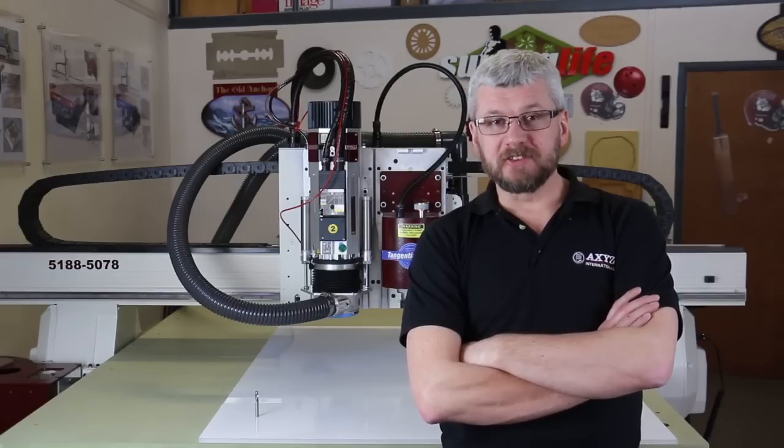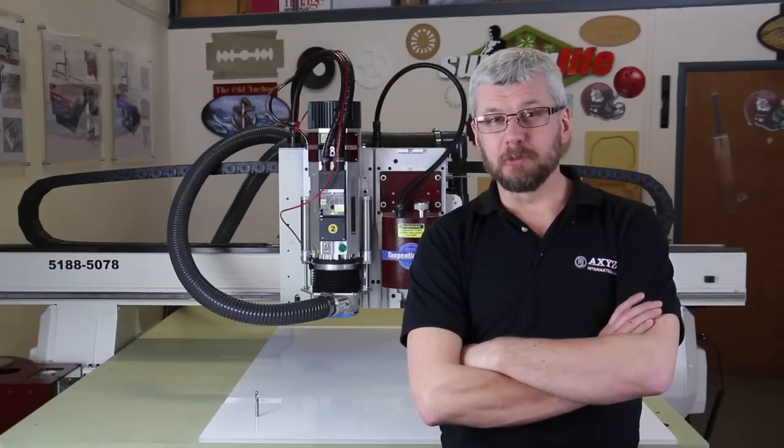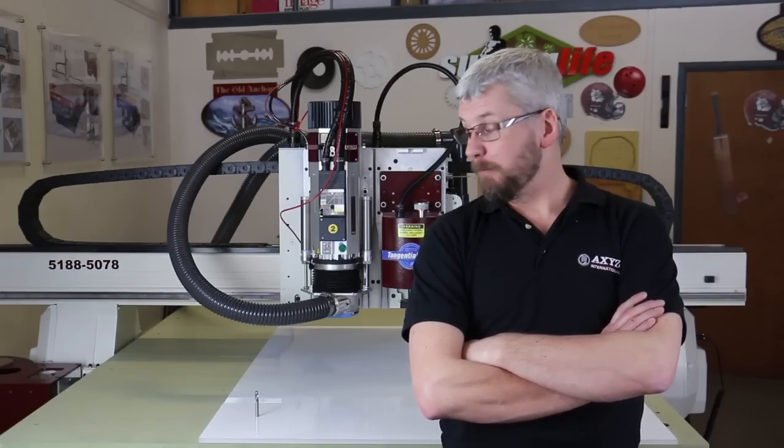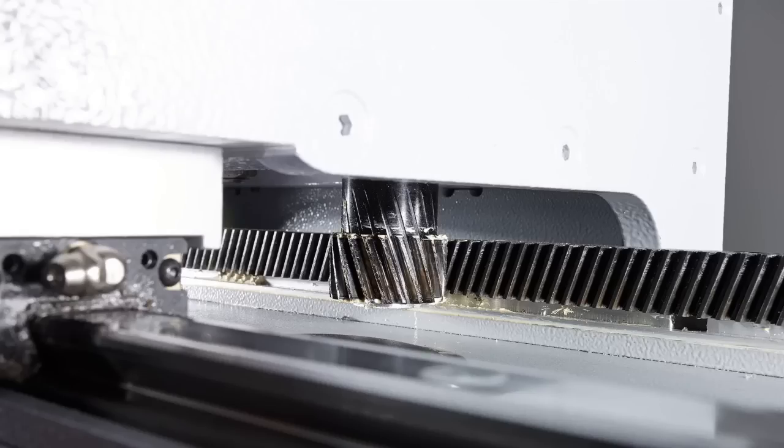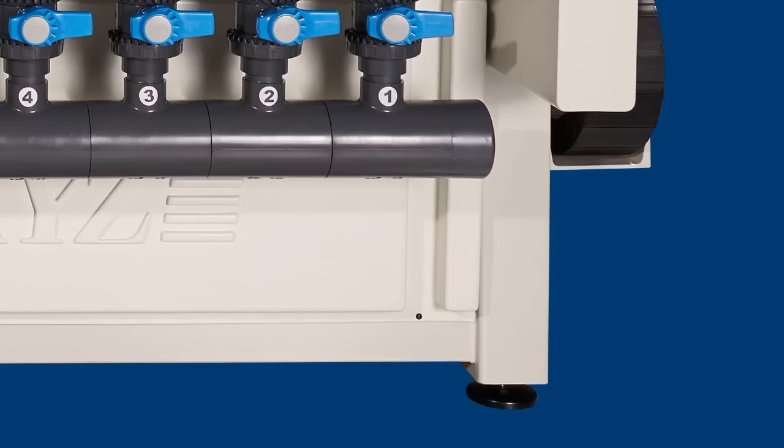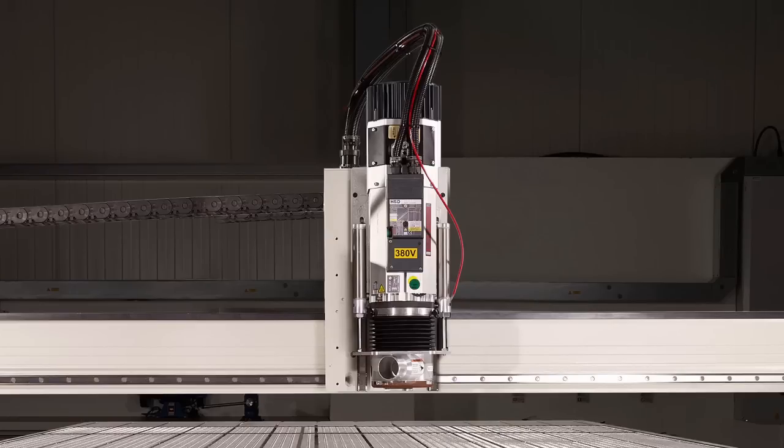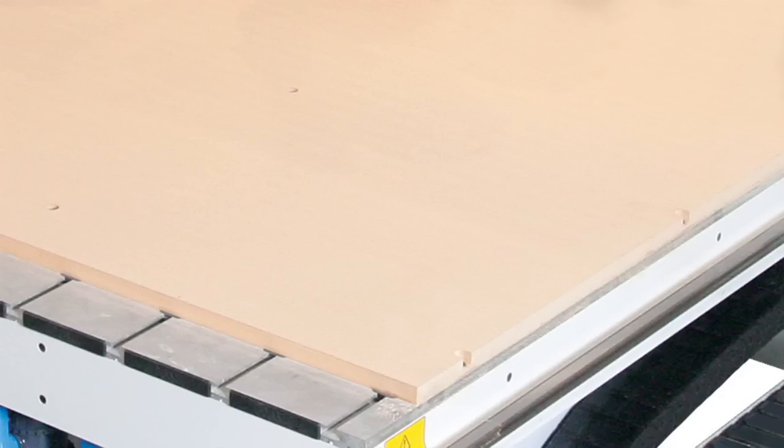Of course, all these factors are irrelevant if you don't have a suitable machine. For example, this machine has servos, helical rack, a rigid base, a good quality spindle, and a flat sacrificial bed.